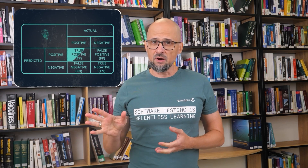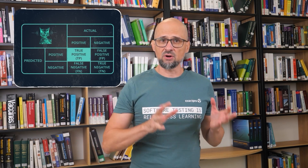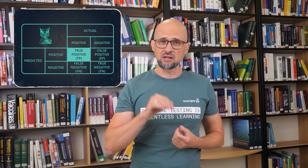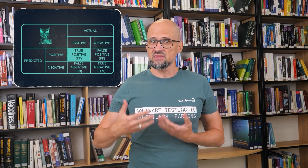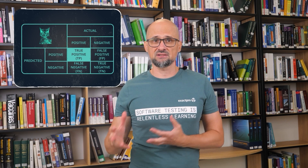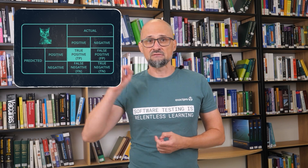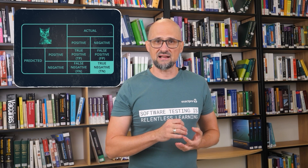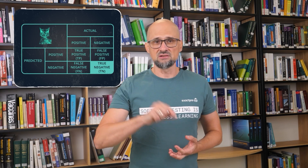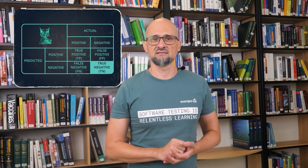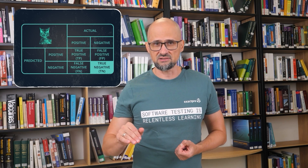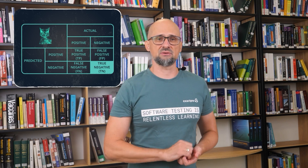As you can see from this table, true positive is the number of objects that the model has assigned to a given class and they truly belong to that class. For example, the model predicts that the text is a bug description and it really is a bug description. True negative is the number of objects the model has not assigned to that class and they are indeed not in that class — that is, the model says that the text is not a bug description and it's really not a bug description.